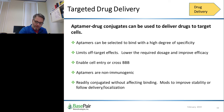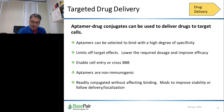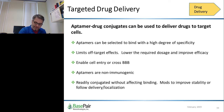Aptamer drug conjugates can also be used to deliver drugs to target cells. Aptamers can be selected to bind with a high degree of specificity to cell surfaces. Directed delivery of drug compounds can limit off-target effects, and increased delivery to target cells can lower the required dosage and improve efficacy. Targeted aptamer binding can enable entry into cells or across the blood-brain barrier. Aptamers are also non-immunogenic and can be conjugated without affecting selective binding, enabling modifications to improve stability or labeling to assess aptamer drug delivery.